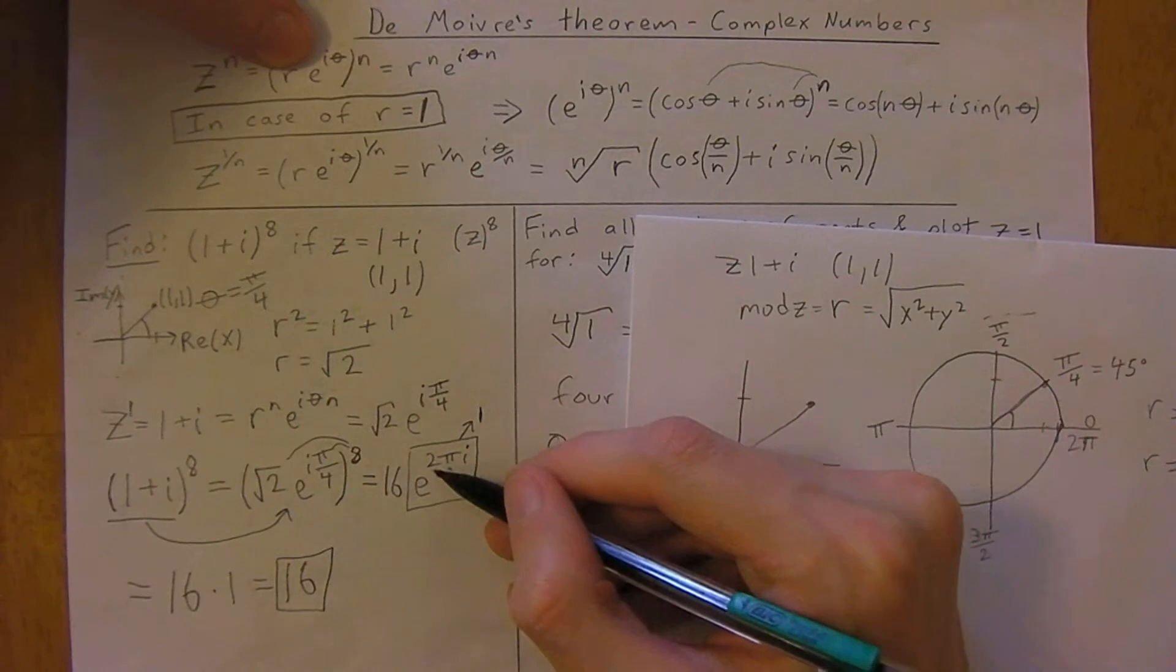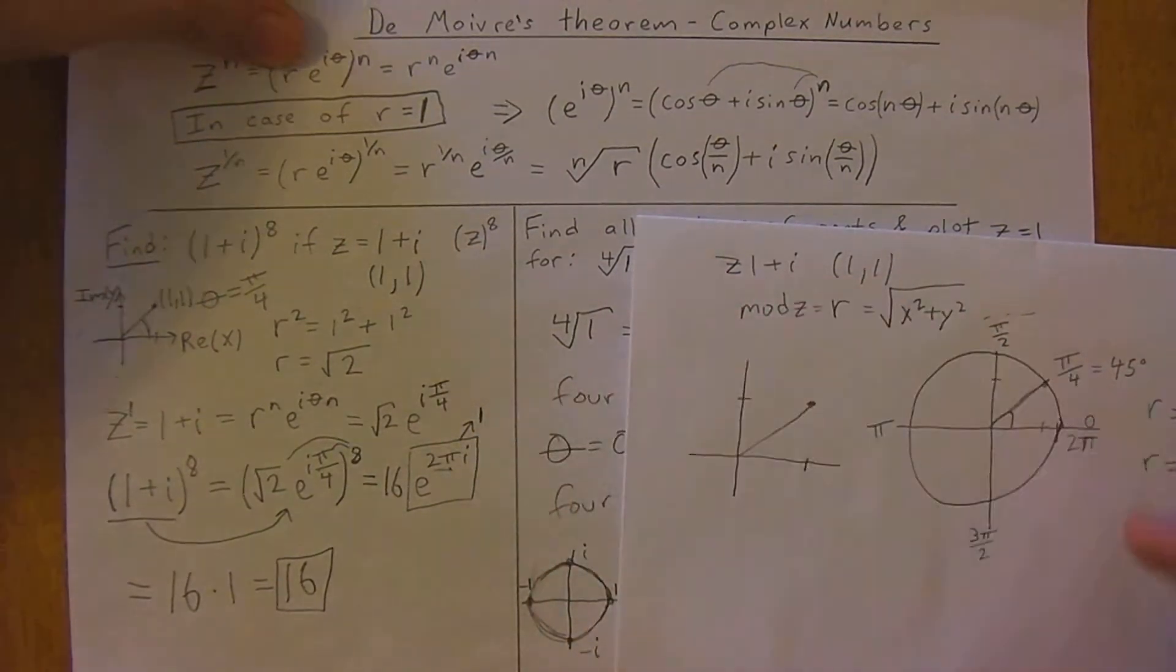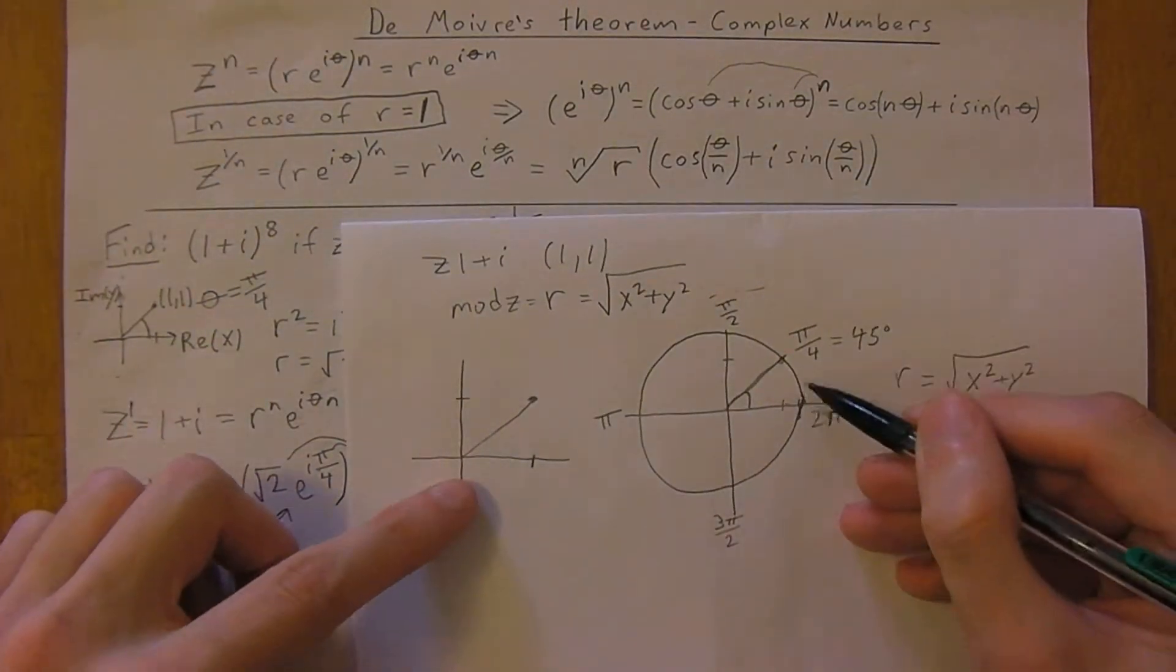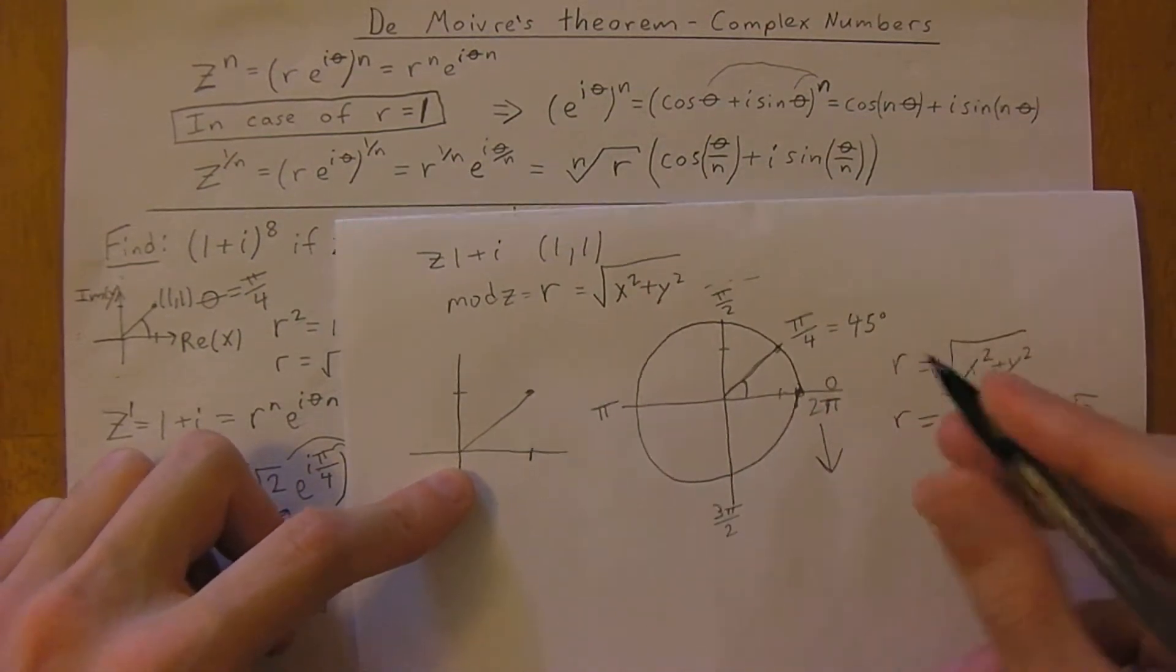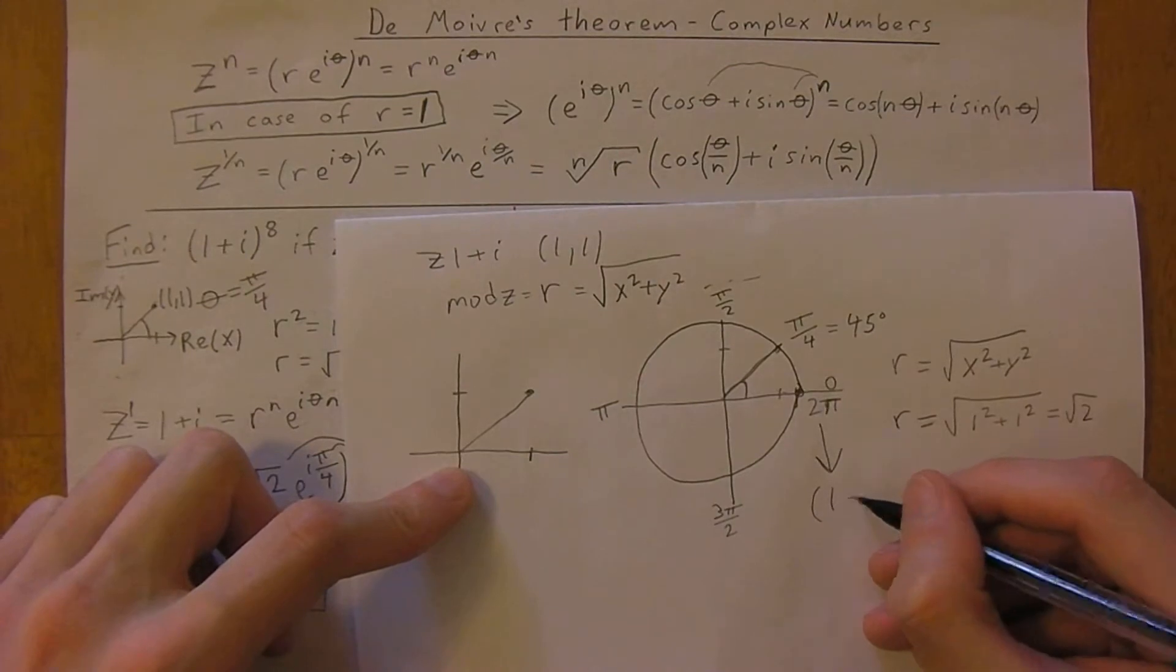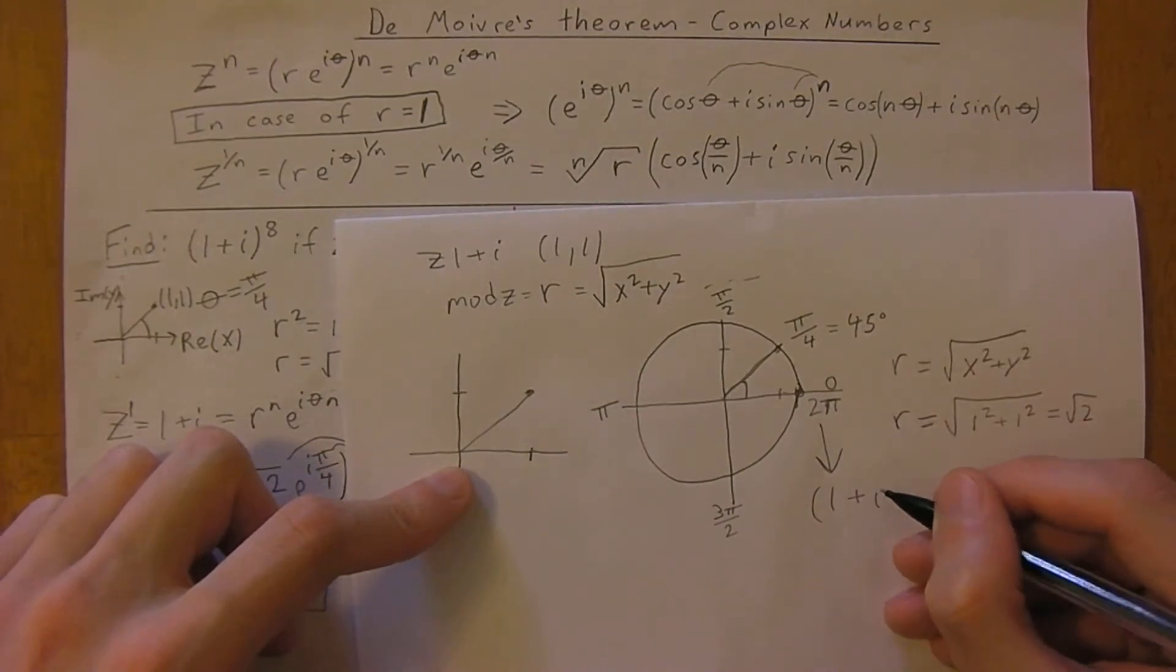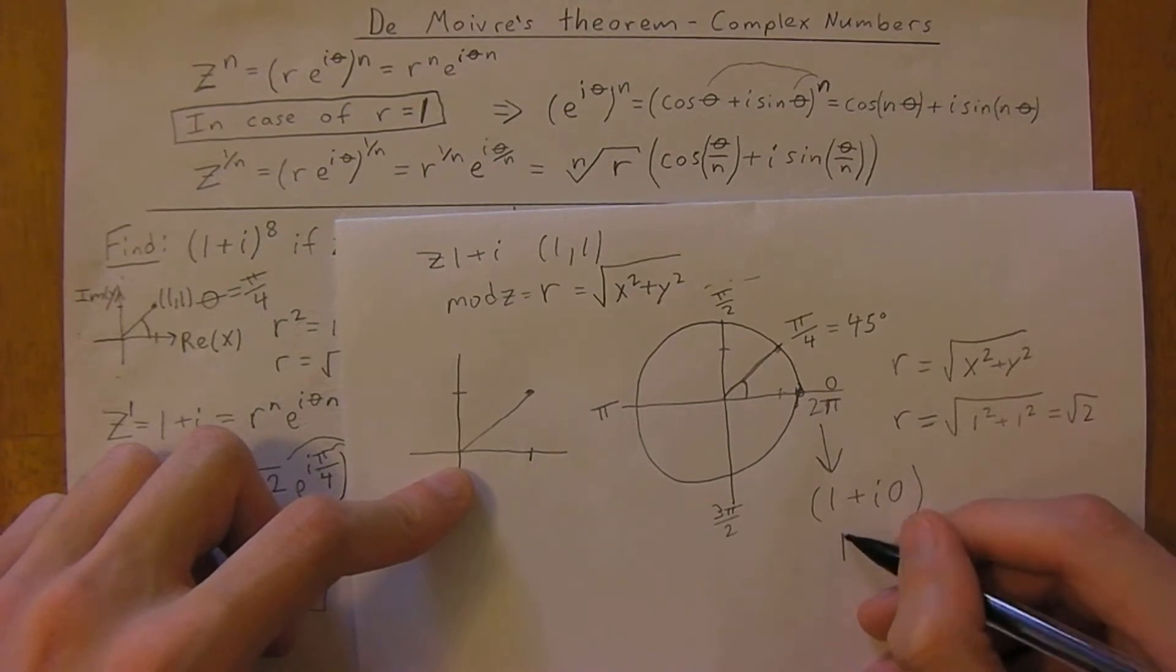Now working with the graph again, you know that if you have 2 pi, you go all the way around the circle and back to 2 pi. That is the same as giving you the point 1 plus 0i, or just 1.